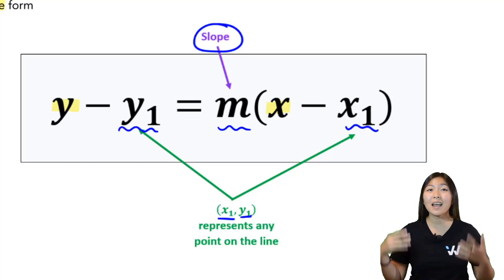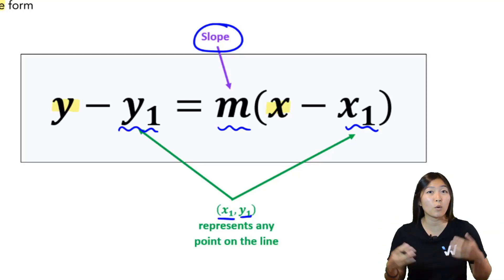So as long as I have a point on the line, for example, maybe negative 1, 4 is on the line, then I can use that to come up with the point-slope form equation.